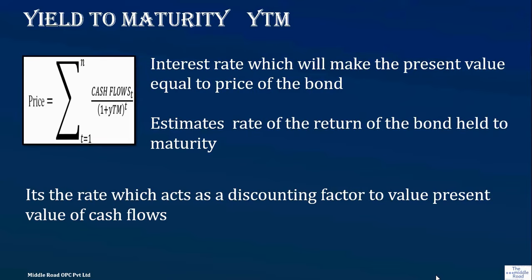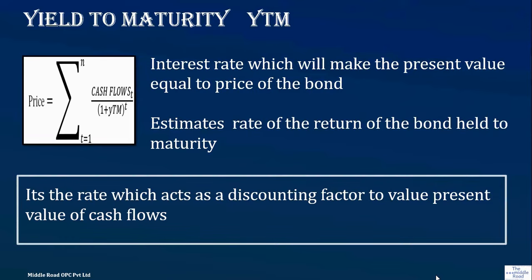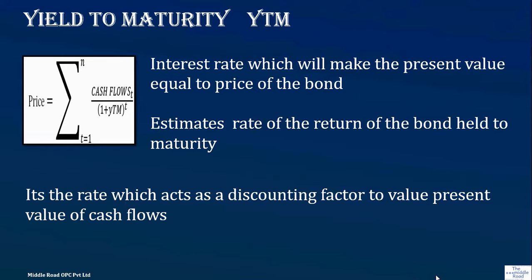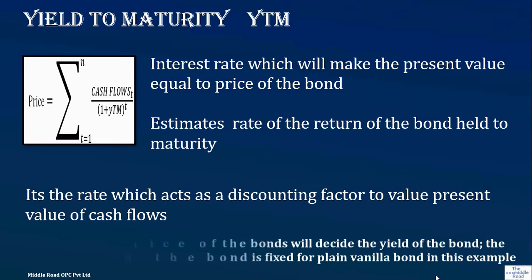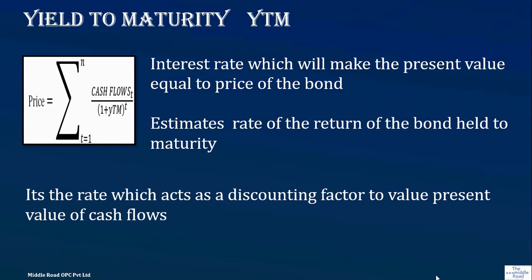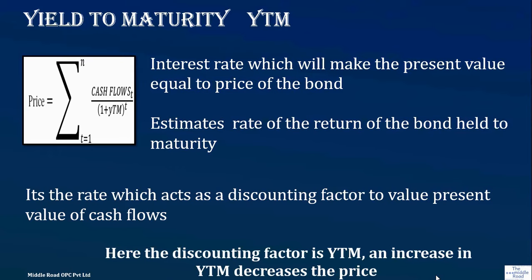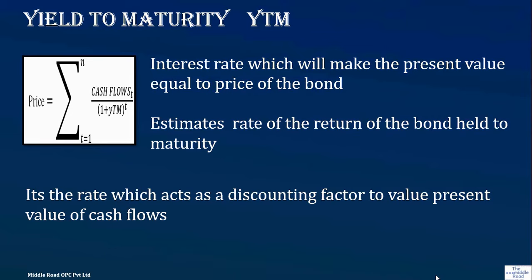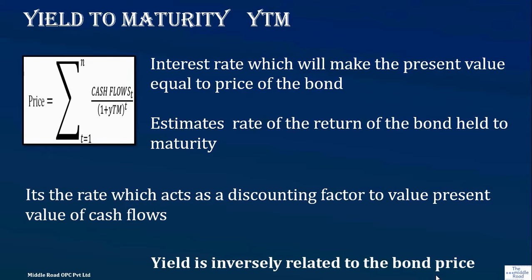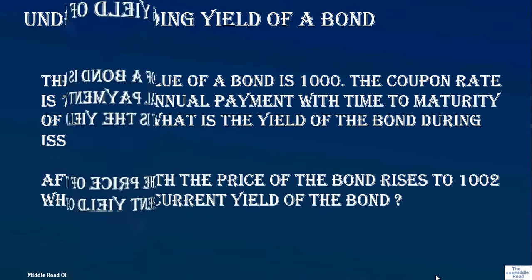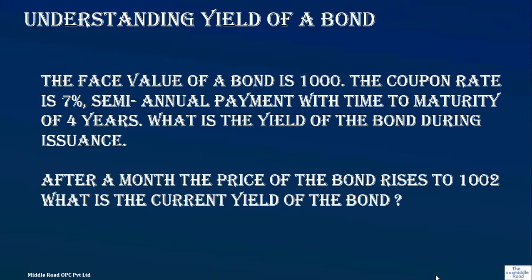Yield to maturity (YTM) is the discount factor — it is basically the return of the bond when held to maturity, though bonds are usually traded on the stock exchange or over the counter before maturity. Since the price keeps changing, YTM changes every time. The price decides the yield. Because the discounting factor is in the denominator, an increase in it decreases the price. The higher the yield to maturity you desire, the lower the price — it is inversely related.